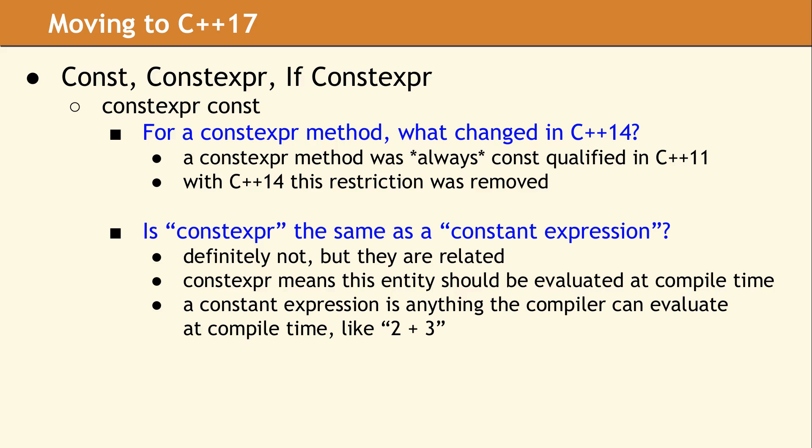A constexpr method has an interesting story. There was a change in the standard between 11 and 14. In C++11, adding constexpr to a method silently added a const qualifier, meaning the members of the class cannot be modified. In C++14, this behavior changed and the implicit const qualifier is not assumed. This is an area where you will need to review your code. Now, if you want a constexpr method to also be const qualified, both keywords are required.